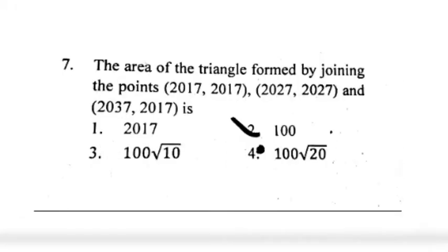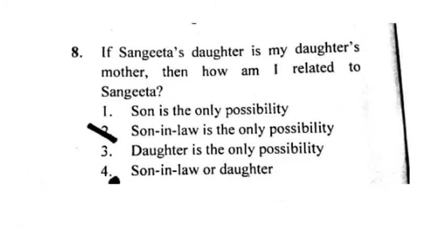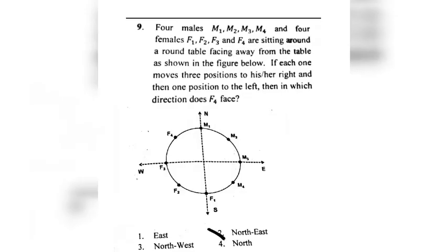This question is about the total area of triangles, and the right option is 100, option number 2. The next question is very interesting — it is about the relationship of Sangeeta with someone. I am in doubt between option number 2 and option number 4. Maybe option number 4 is also right, but according to me option number 2, son-in-law, is the only possibility and the right option.